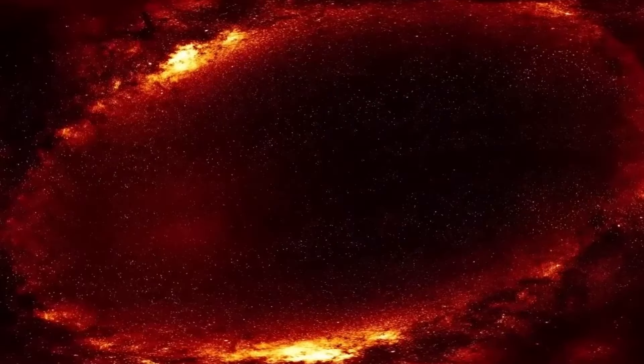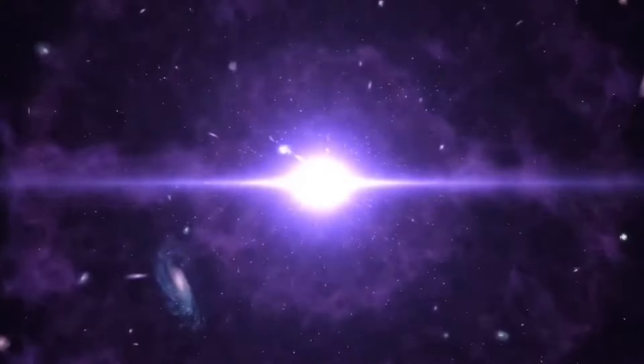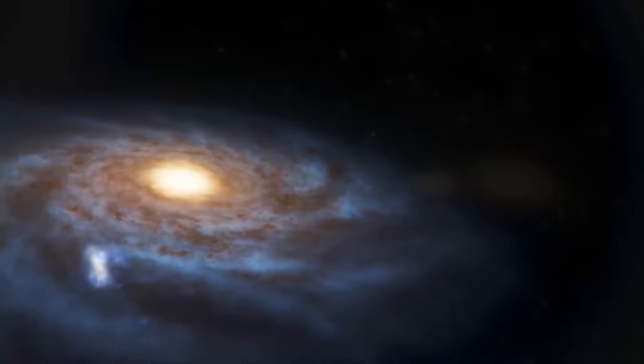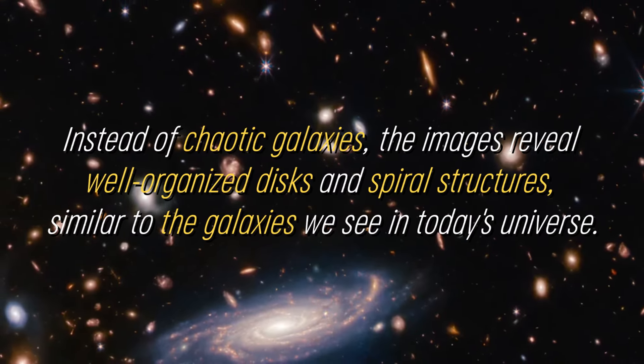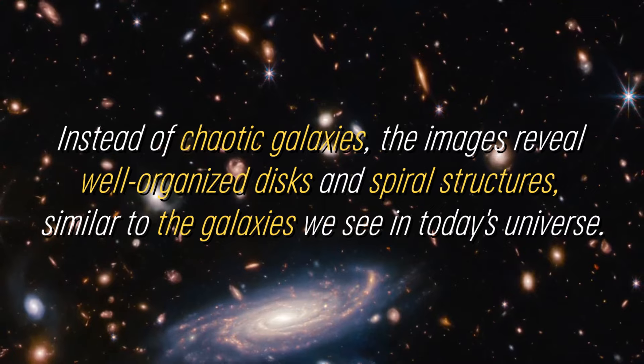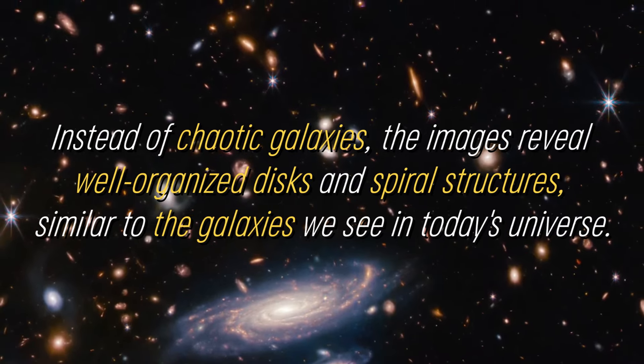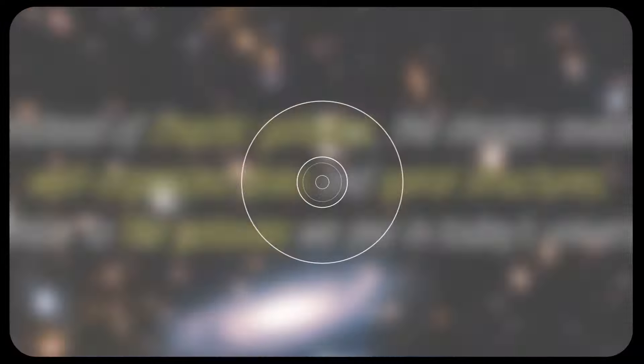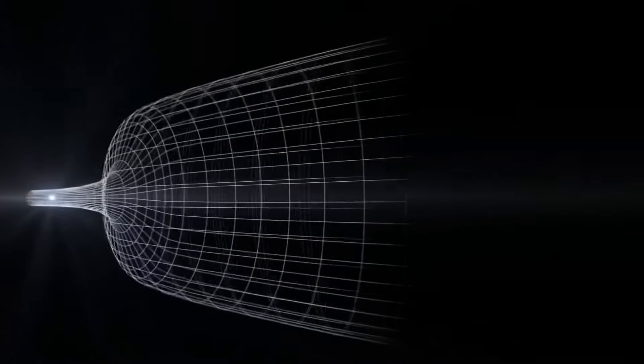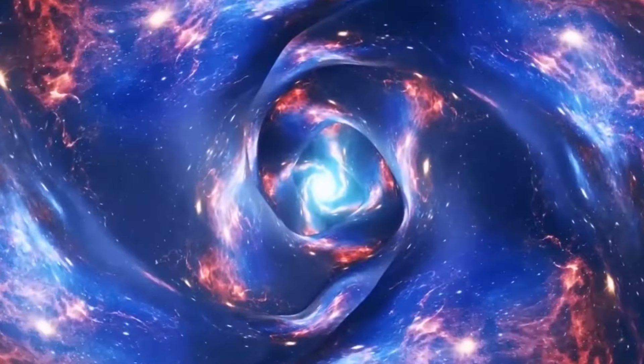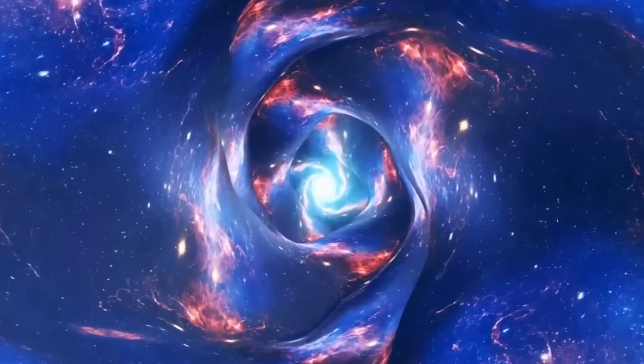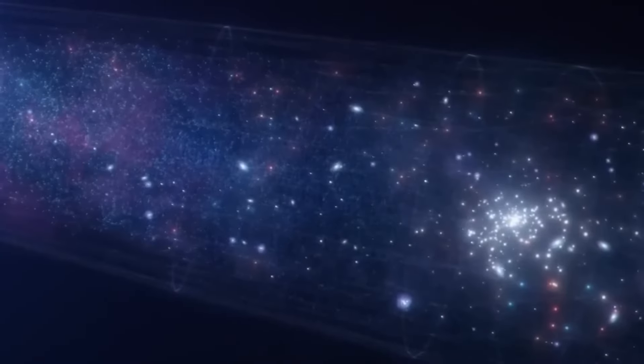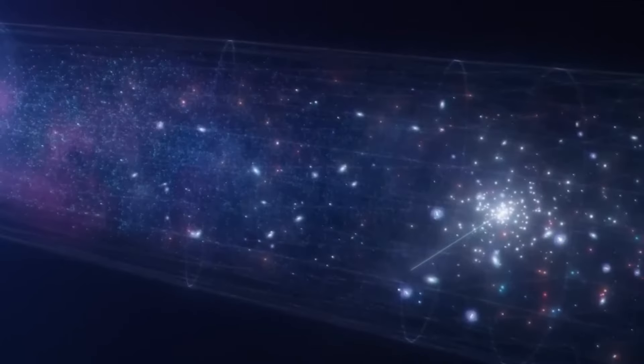Chaotic and disrupted galaxies due to multiple collisions were expected to be observed, but the images captured by JWST tell a different story. Instead of chaotic galaxies, the images reveal well-organized disks and spiral structures, similar to the galaxies we see in today's universe. This unexpected observation challenges the idea that mergers are a common process in galaxy evolution.